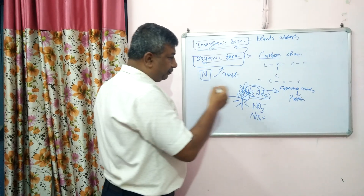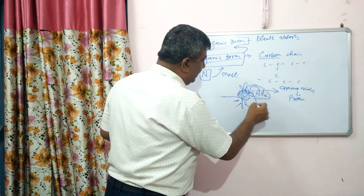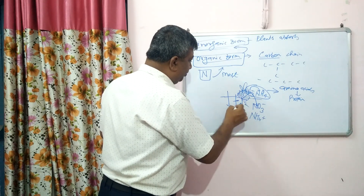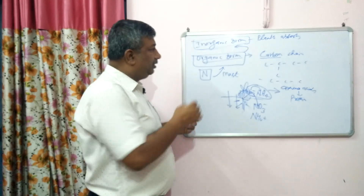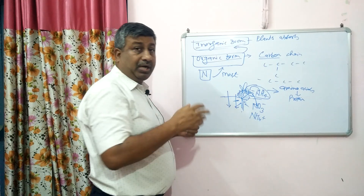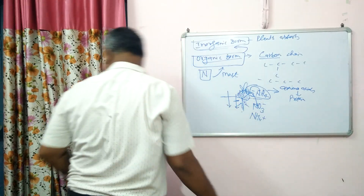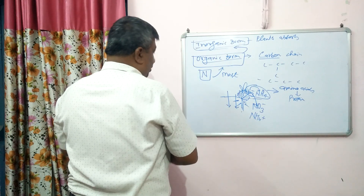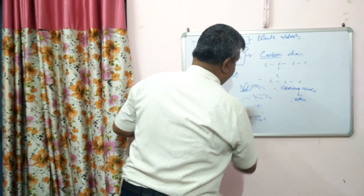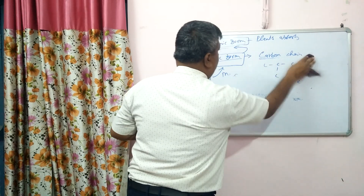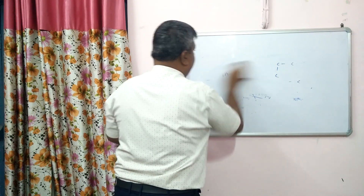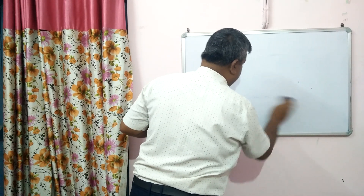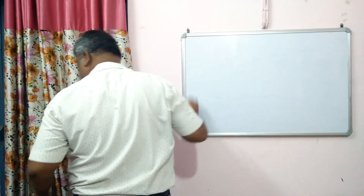After the death of the plant, this material comes back into the soil, and then there is further conversion between organic and inorganic form. So it is very important to know what are the different organic forms of nitrogen in soil, because most of the nitrogen in soil is present in carbon-chain organic compounds.